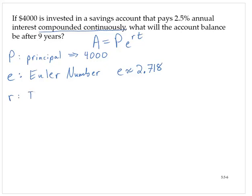R is the interest rate as a decimal, so in this problem that would be 0.025.